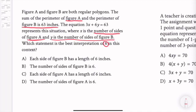First of all, we know that this equation right here is basically representing the total perimeter of figure A plus figure B. The perimeter of figure A plus figure B is equal to 63.